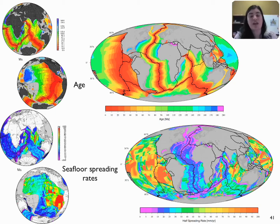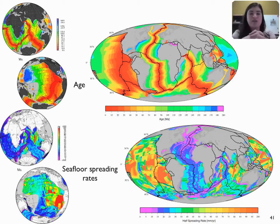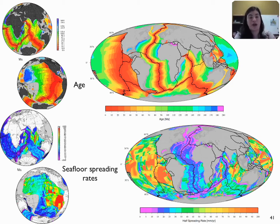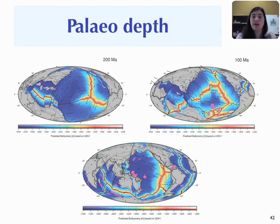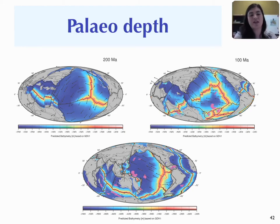One of the other things we can do is try to get an idea of what the paleo depth of the ocean basins was through time. By having models for the age of the oceanic lithosphere back to the Jurassic, we can use simple age-depth relationships, test several models, and compute paleo depth estimates. Paleo depth estimates are quite useful for paleoclimate modelers, giving them an idea of what the topography of the ocean basins was like — because that affects oceanic circulation, oceanography, and gateway opening and closure. We also use it to try to get an idea of what the long-term sea level history has been like.